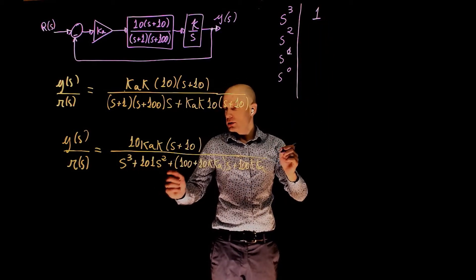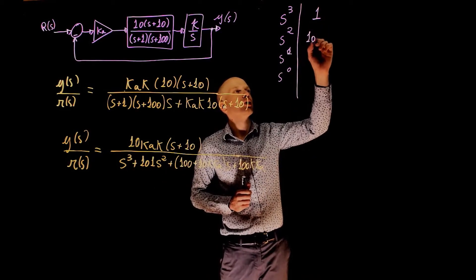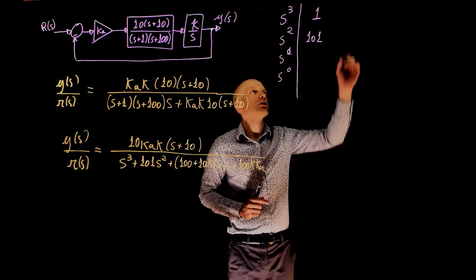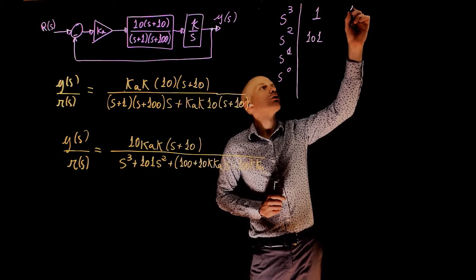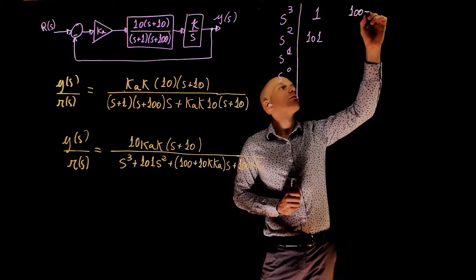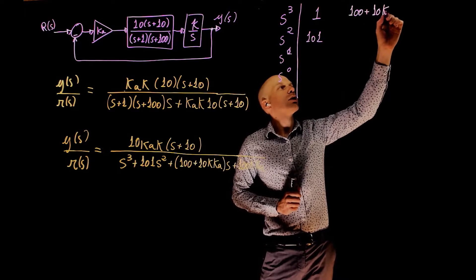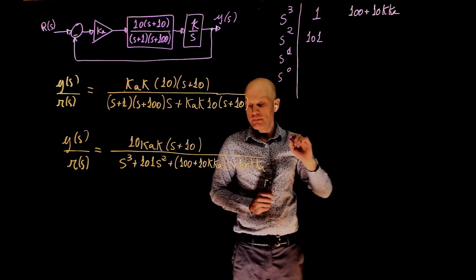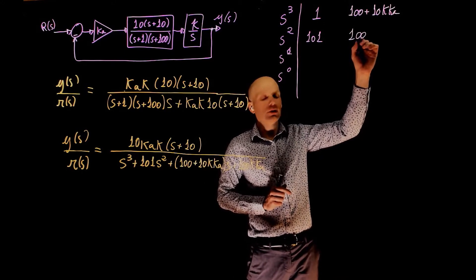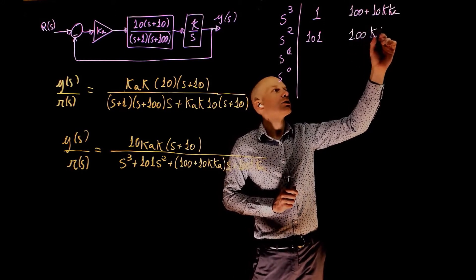s to the power of 2 is 101, s to the power of 1 is 100 plus kak times 10, and s to the power of 0 is 100k times ka.